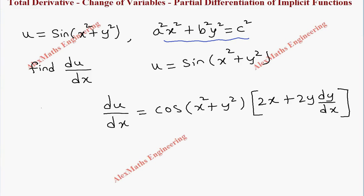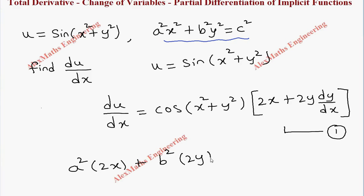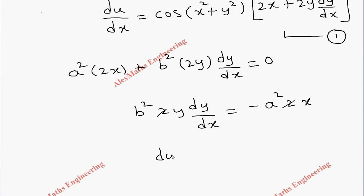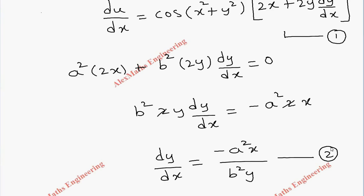Let's differentiate the constraint. a² is constant and x² gives 2x, plus b² is constant and y² gives 2y into dy/dx, equal to 0. From this, minus b²·2y·(dy/dx) equals minus a²·2x. We can cancel 2 and 2, and so the value of dy/dx is minus a²x divided by b²y. We will keep this as the second expression.